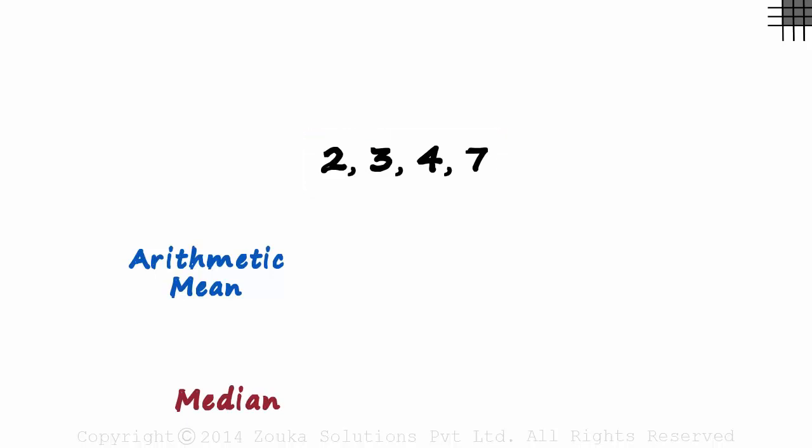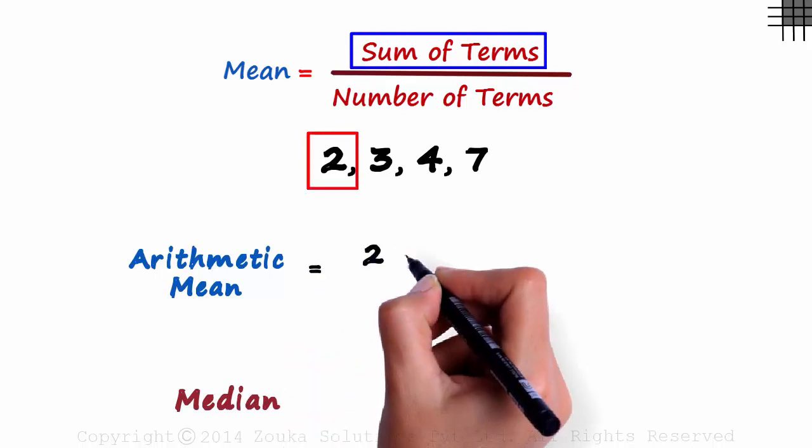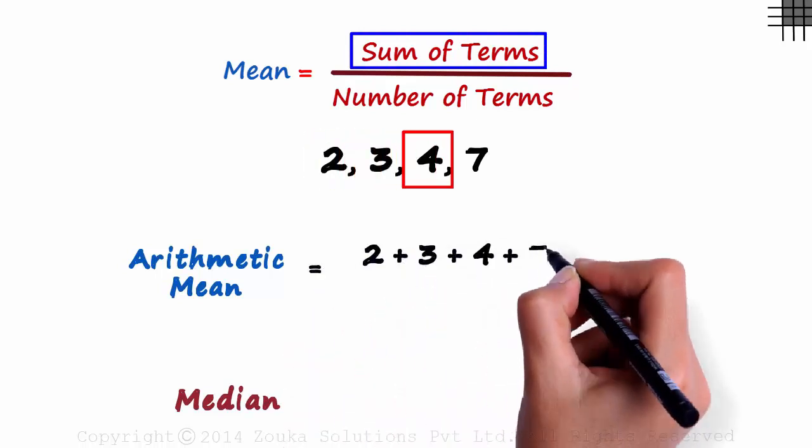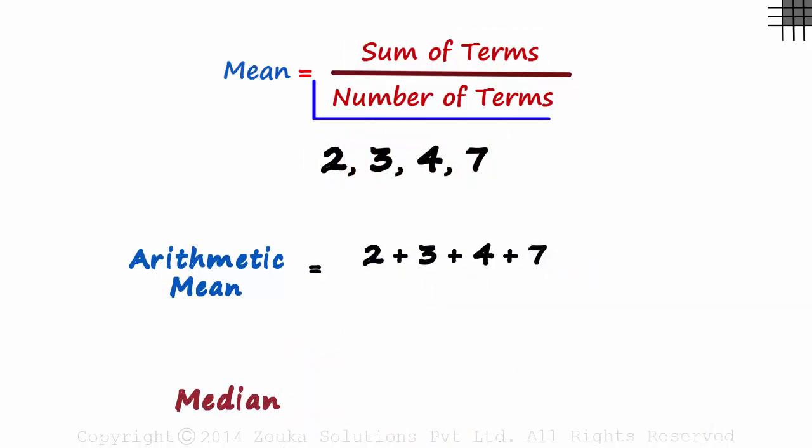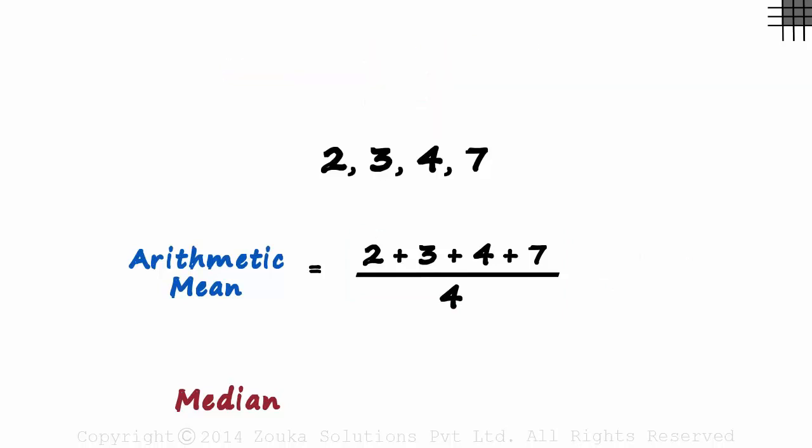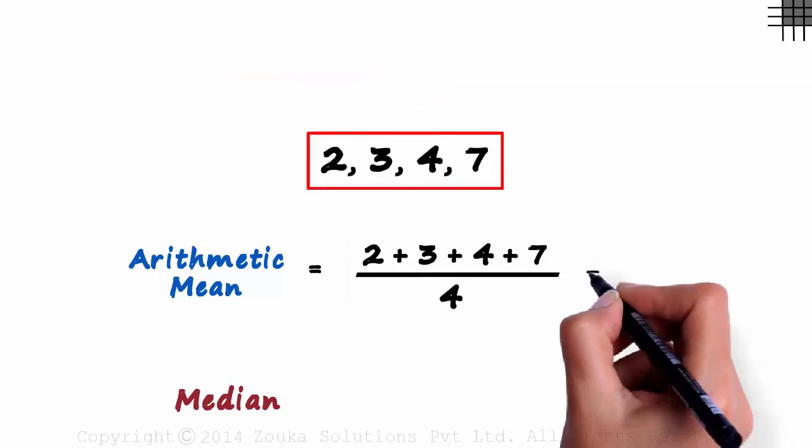There is no pattern in this set of numbers. Using the traditional approach, we can find the mean with the formula sum of terms divided by the number of terms. The sum of terms would be 2 plus 3 plus 4 plus 7, and the number of terms is 4. This will be 16 divided by 4 which equals 4. The arithmetic mean of these four numbers is 4.